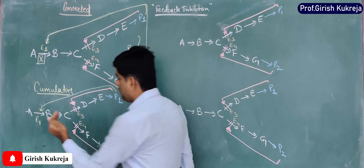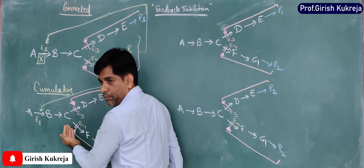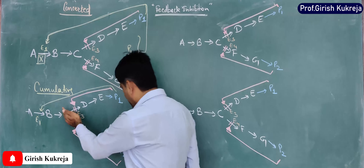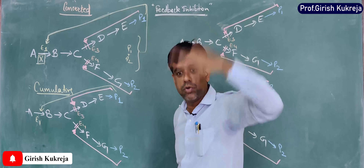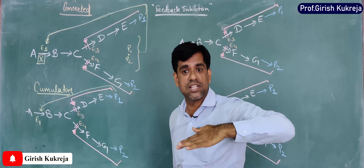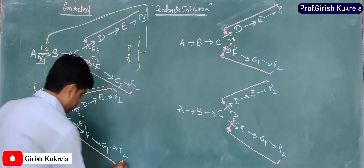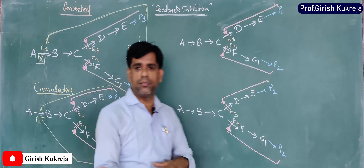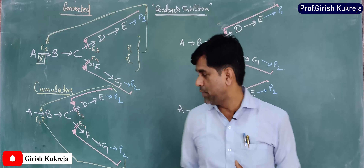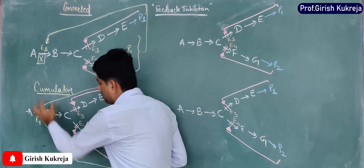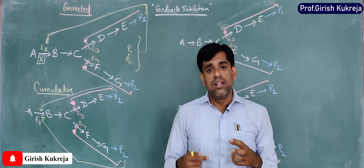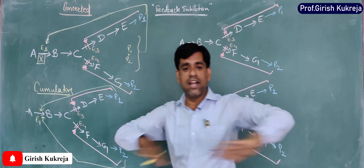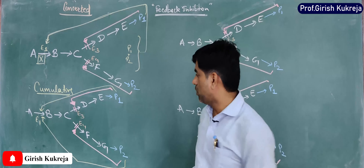Now the pathway operates at a lesser rate because C is directed only to P2. Eventually P2 will also be synthesized beyond its threshold value. This P2 then goes and also inhibits E1 — say by another 40–50%. When both P1 and P2 are bound to the surface of E1, the effect is additive, and the enzyme is around 80–90% inhibited in the presence of both end products.